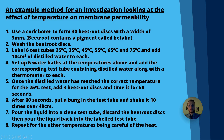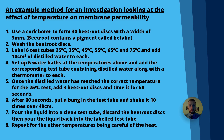Label six test tubes at 25, 35, 45, 55, 65, and 75 degrees and add 10 cm³ of distilled water to each. Set up six water baths at those temperatures. You can use a kettle with boiling water in a beaker and add cold water with a thermometer. We used thermostatically controlled water baths and mixed with cold water to get the required temperature — we were within a couple of degrees, which was close enough.